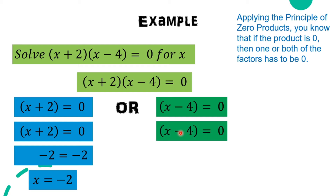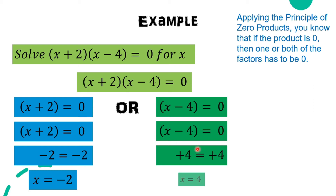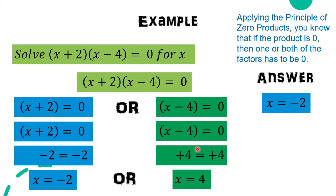For the second factor, x - 4 = 0, we add 4 to both sides using the addition property of equality. Then we get x = 4. So now we have the two answers: x = -2 and x = 4.